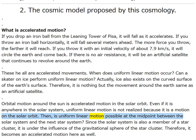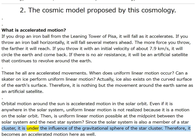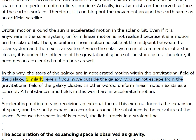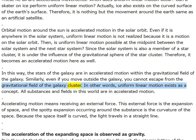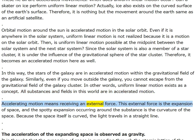The stars of the galaxy are in accelerated motion within the gravitational field of the galaxy. Even outside the galaxy you cannot escape from the gravitational field of the galaxy cluster. In other words, uniform linear motion exists only as a concept. All substances and fields in this world are in accelerated motion — accelerating motion means receiving an external force. This external force is the expansion of space, and the spotty expansion occurring around the substance is the curvature of space.